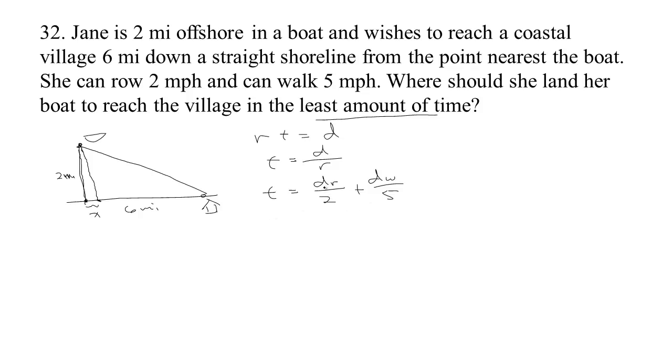Now we have these two quantities, the distance that she rows and the distance that she walks but they're both related to x. First, the distance that she rows is part of a right triangle here. So we know that two squared plus x squared, so that would be four plus x squared, is the distance that she rows squared. So the square root of four plus x squared is the distance that she rows.